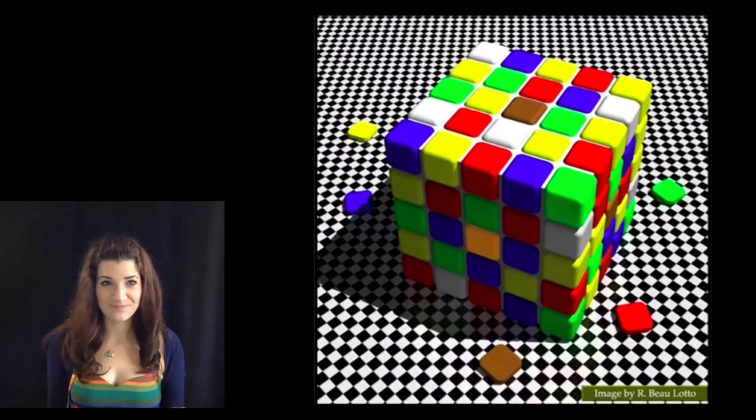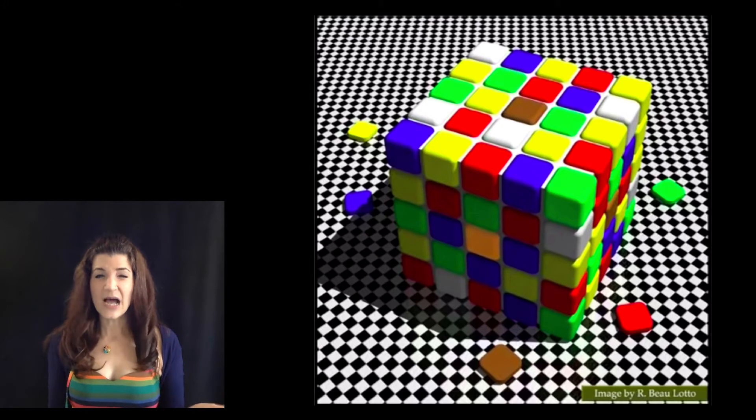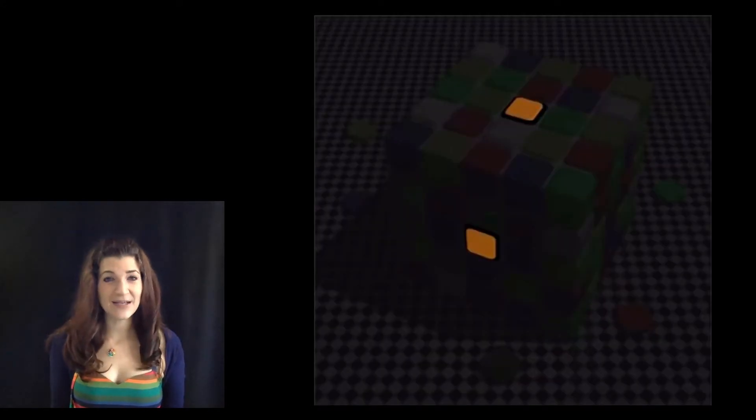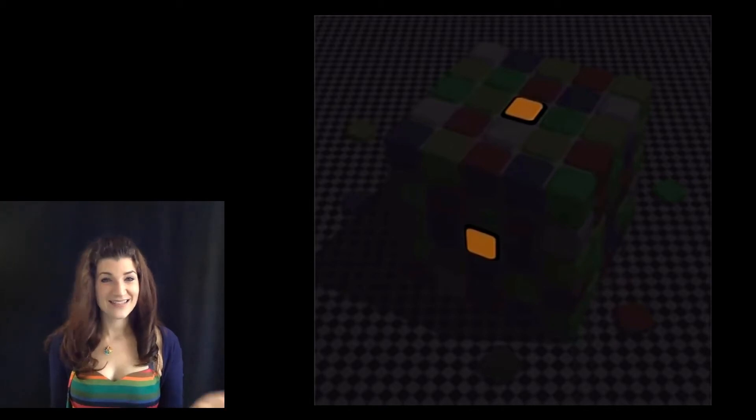Okay, so here's an example. If you look at the central squares on the top and the side facing us, the top one appears to be brown and the one on the side facing us appears orange-ish. Yes? Okay. But if we cover up the rest of the surfaces with a dark mask, so you can't see anything except those two squares, you'll see that they are in fact the same.